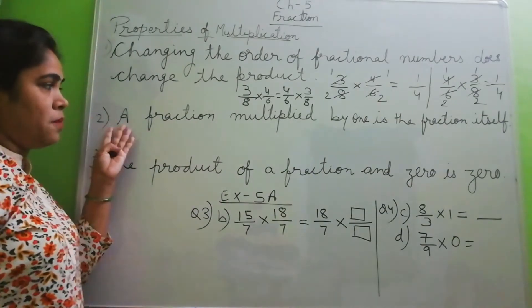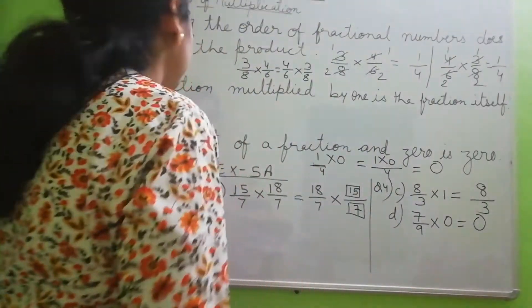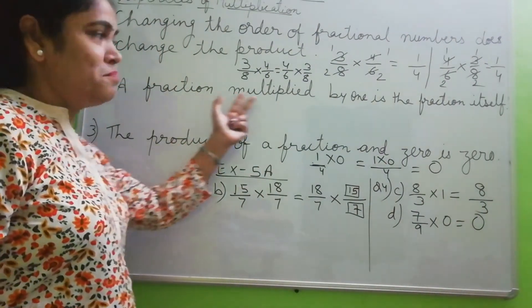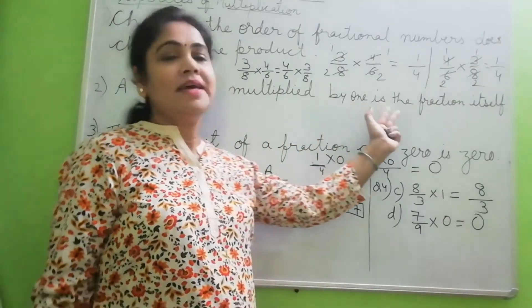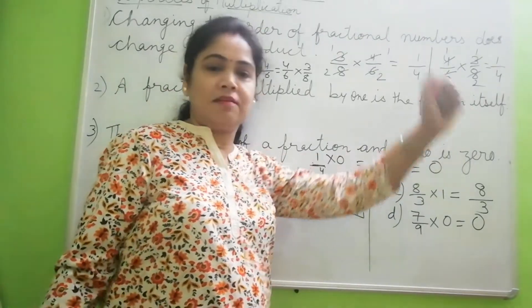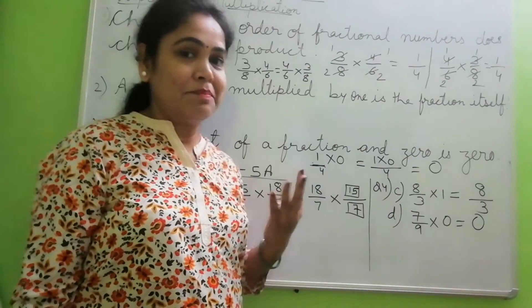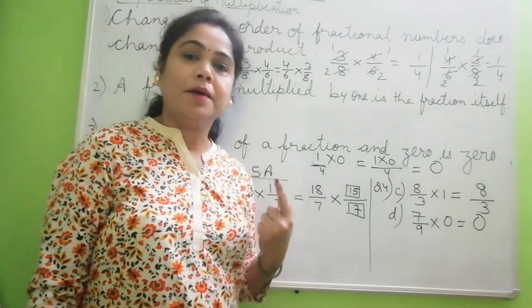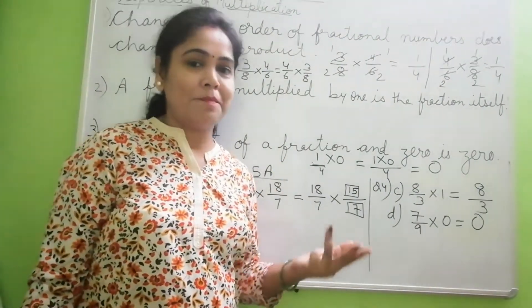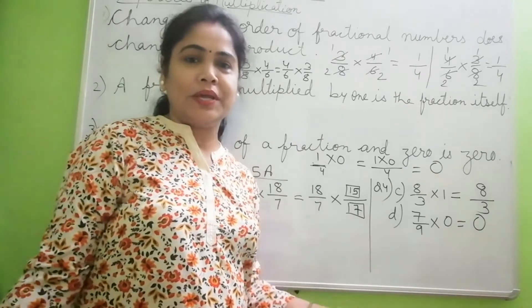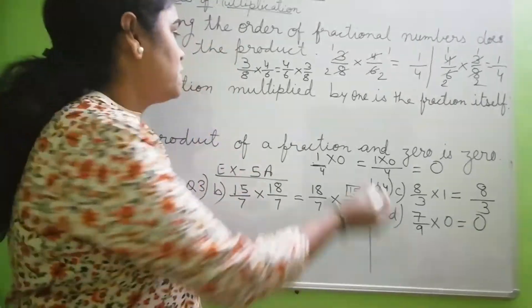Similarly, next property is: a fraction multiplied by 1 is the fraction itself. This also you have learned in numbers property, that a number multiplied by 1 is number itself. Similarly, we will do in the case of fraction.